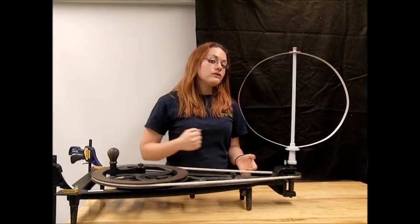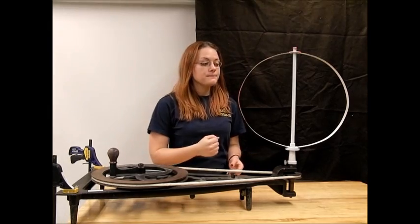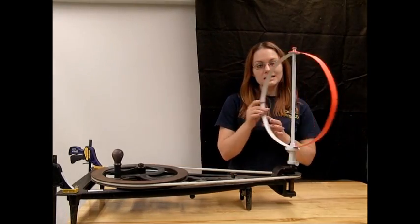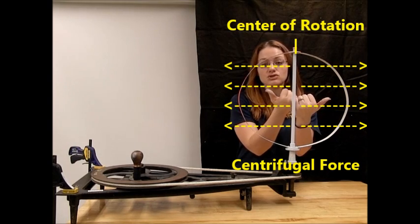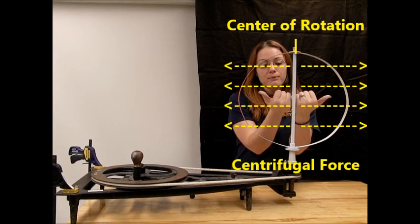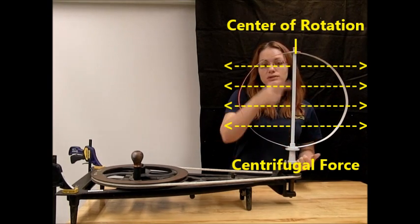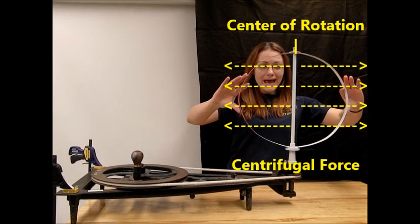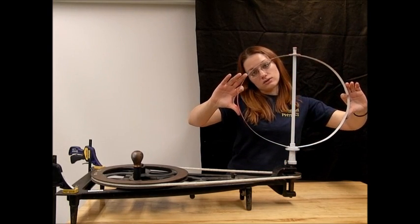If we then introduce rotational motion, we will be applying a force known as the centrifugal force that points outward from the center of rotation, which will then act on our steel band loop.